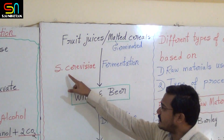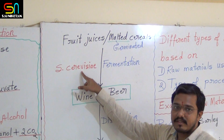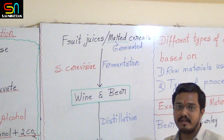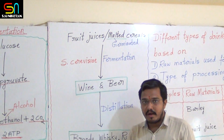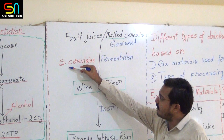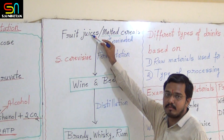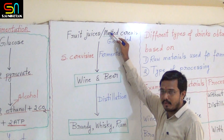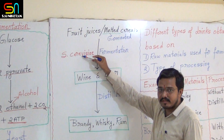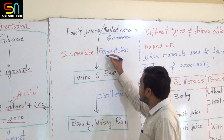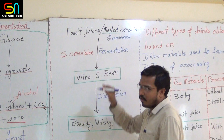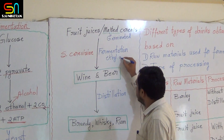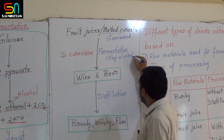After the raw materials are placed in the tank, Saccharomyces cerevisiae yeasts are added. Saccharomyces cerevisiae ferments the carbohydrates present in the fruit juices or malted cereals. The yeast does this to get energy, but during this process ethyl alcohol — ethanol — is produced, along with the carbohydrates.